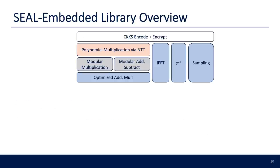Here is an overview of the SEAL Embedded library. At the bottom, we have optimized addition and multiplication operations, including optimized assembly for ARMv6T2 devices and above, with C as a fallback for maximum portability. Above this are algorithms for modular multiplication, addition, and subtraction, including Barrett reduction for efficient modular reduction. We also have polynomial multiplication using the NTT, the number theoretic transform, as well as modules for the inverse FFT, a pi-inverse transformation used in encoding, and sampling from uniform distributions and a centered binomial distribution. CKKS encoding and encryption uses all of these components.